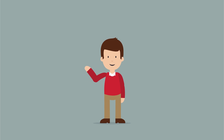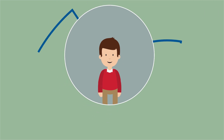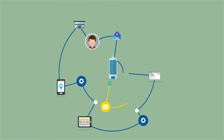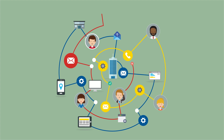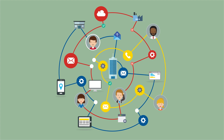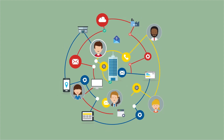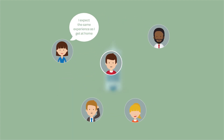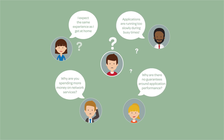This is Ed. Ed is an important CIO. He is responsible for his company's IT infrastructure. The business heads in his organisation are continually demanding that Ed defines an IT strategy that supports the development of the business. And Ed fears that his network infrastructure isn't agile enough to meet the demands of a modern digitised business.